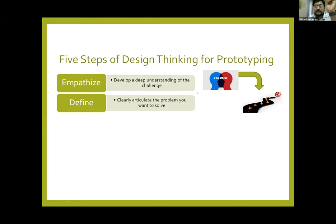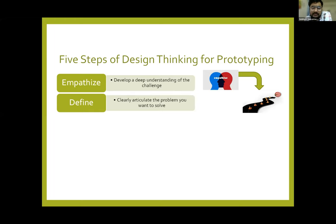These two steps are the most important in designing any product. For example, take Ola or Uber cabs. First, they understood the problem: in the Indian scenario, people were finding difficulties in booking auto rickshaws. They had to call the auto rickshaw driver and wait for them to come. So they developed a mobile application through which we can book a cab — primarily a car, and today auto and bikes are also included. First they defined a problem: this is what people are facing. They empathized about the people — this is the current scenario in India.